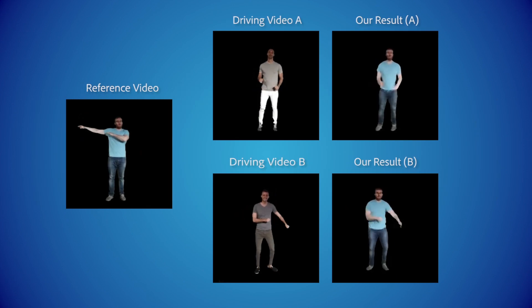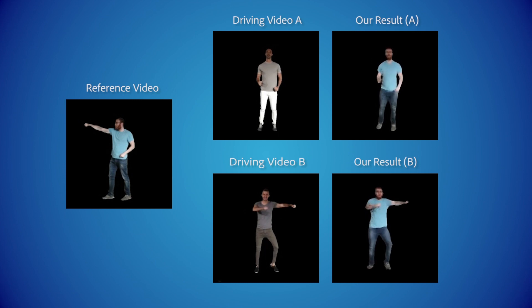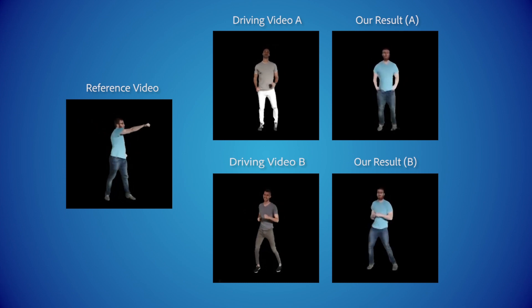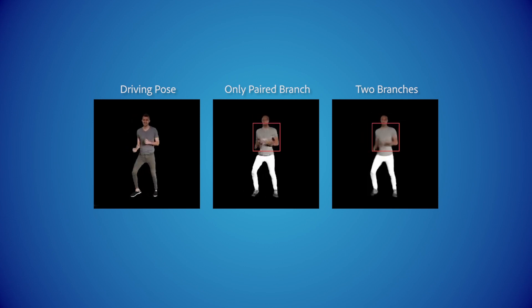In this example, we drive the same trained network using two videos that contain different motions. In addition, we evaluate the necessity of the unpaired branch. It can be seen that using only the paired branch, artifacts of temporal incoherence can be spotted.